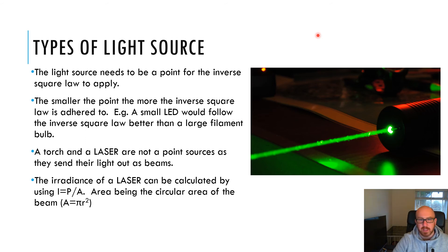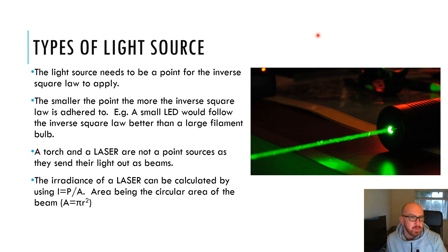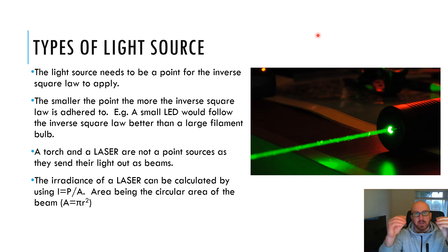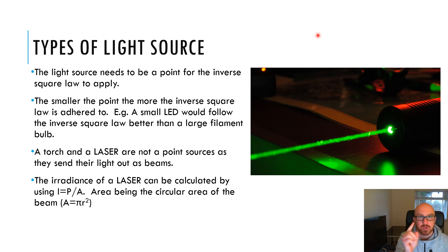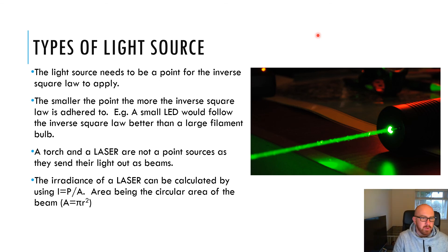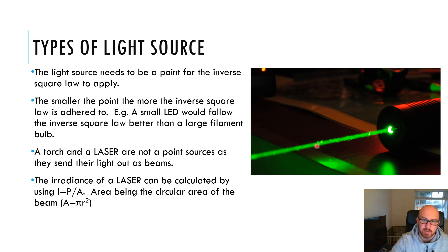Different types of light sources: the light source needs to be a point for the inverse square law to apply. A laser and a torch don't work because they're not point sources — they send light as a beam rather than in all directions. The smaller the point source, the better the inverse square law is adhered to, so a small LED or small bulb follows it much better than a larger bulb with a large filament. If asked to improve the experiment, use a smaller lamp — a smaller point source literally. For a laser, you can calculate irradiance using I = P/A, where the area is the cross-sectional area of the beam — a circle with area πr².